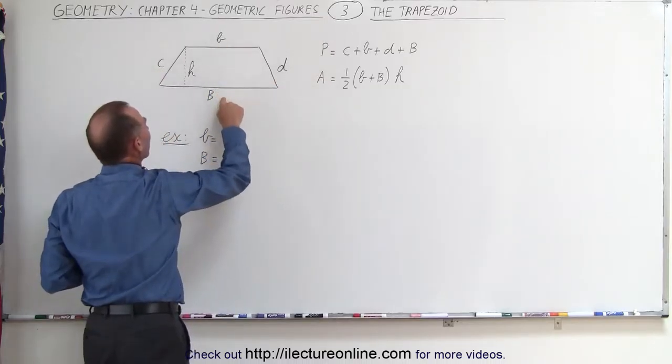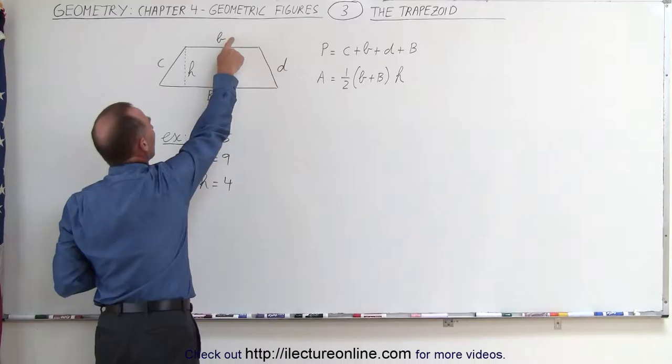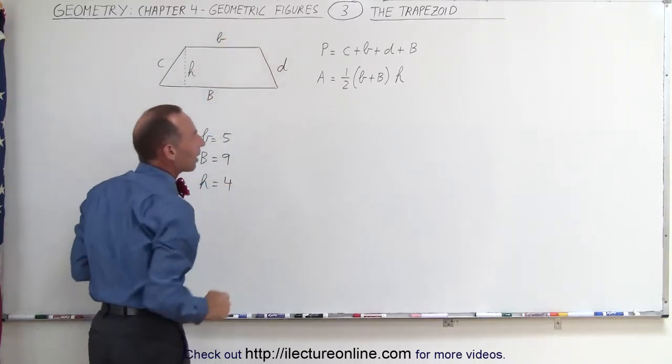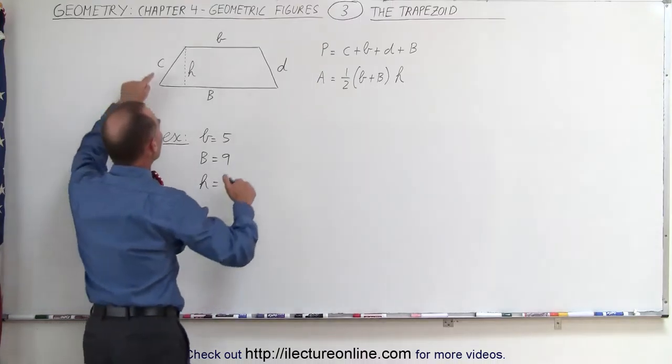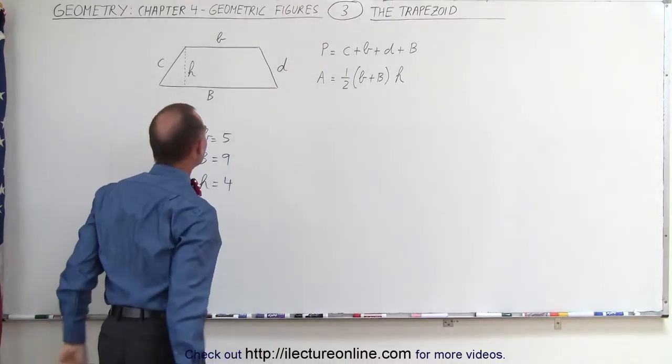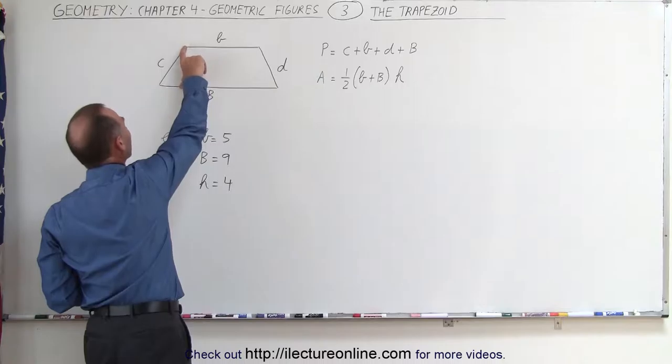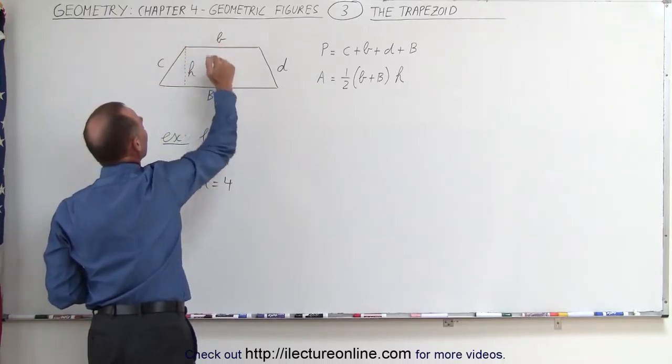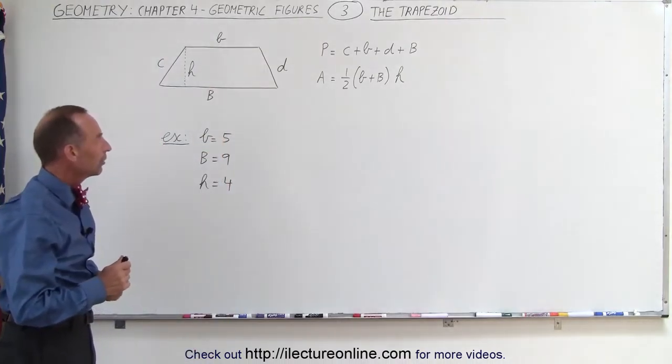We've labeled the top and the bottom: small b for the shortest of the two sides, big B for the longest of the two sides that are parallel to one another. The other two sides, c and d, are labeled as c and d, and then we have the height right here labeled h, which is the perpendicular distance between the two sides that are parallel to one another.